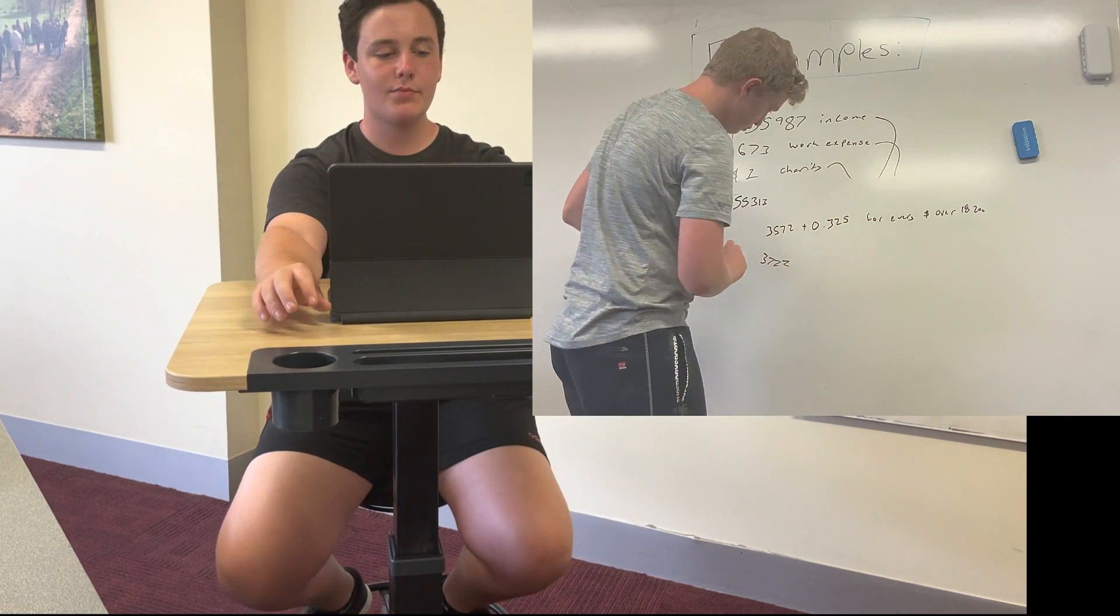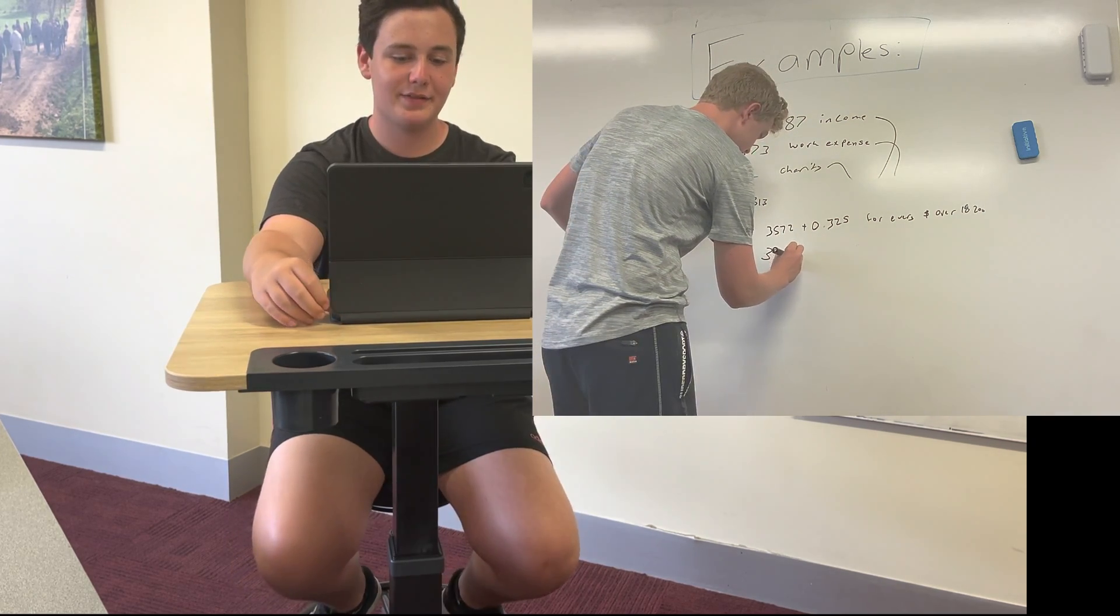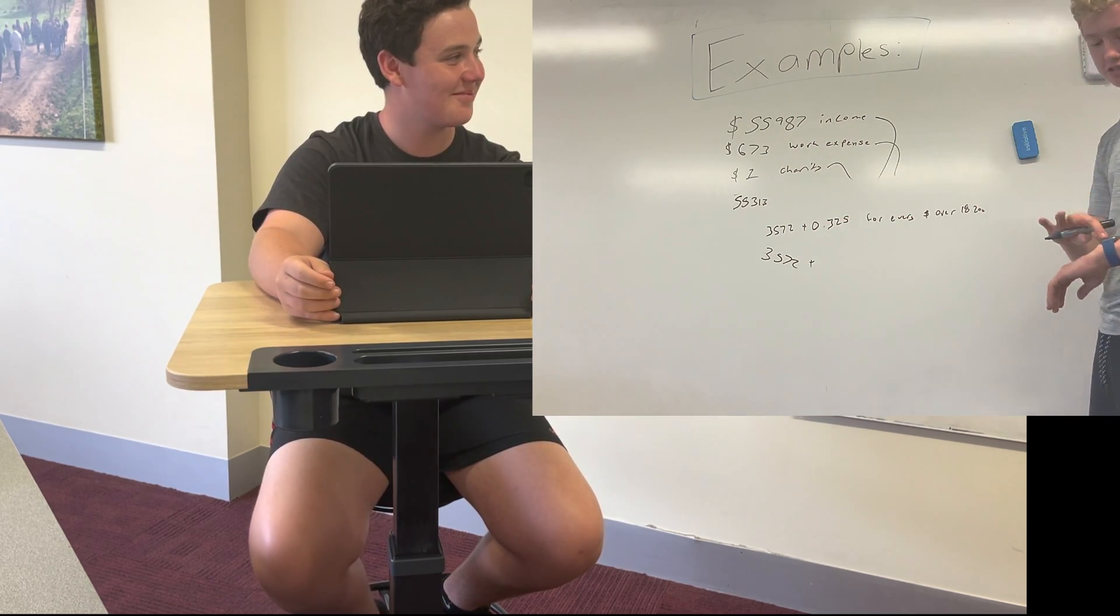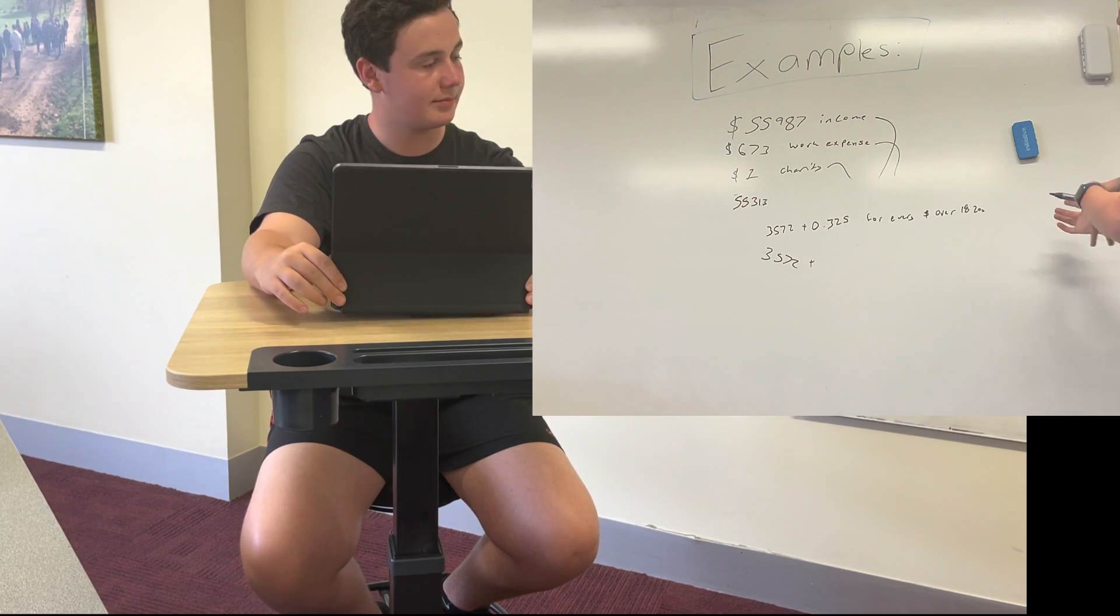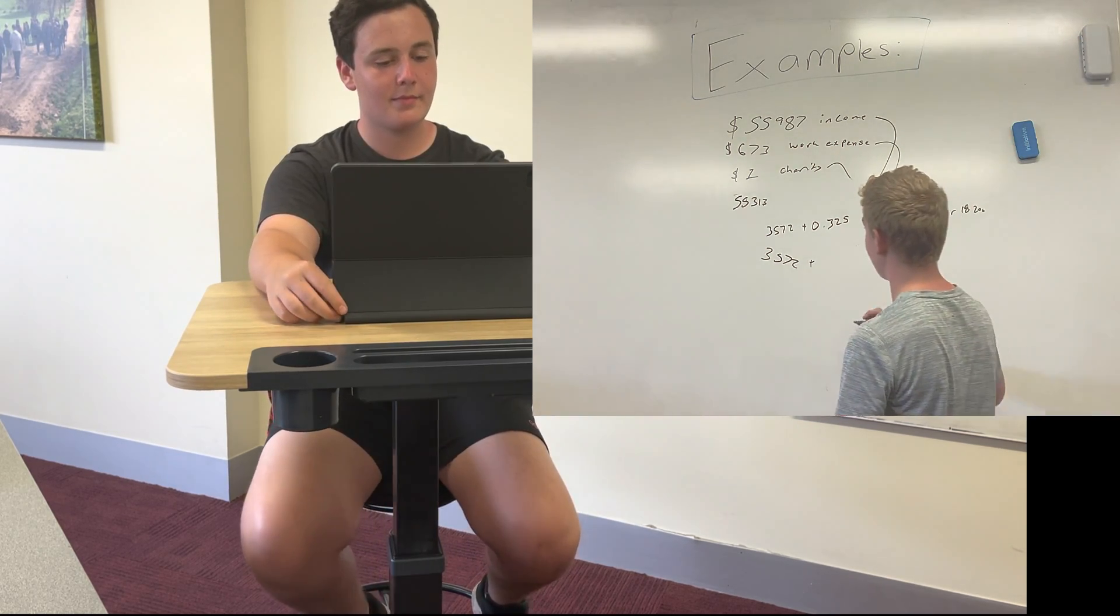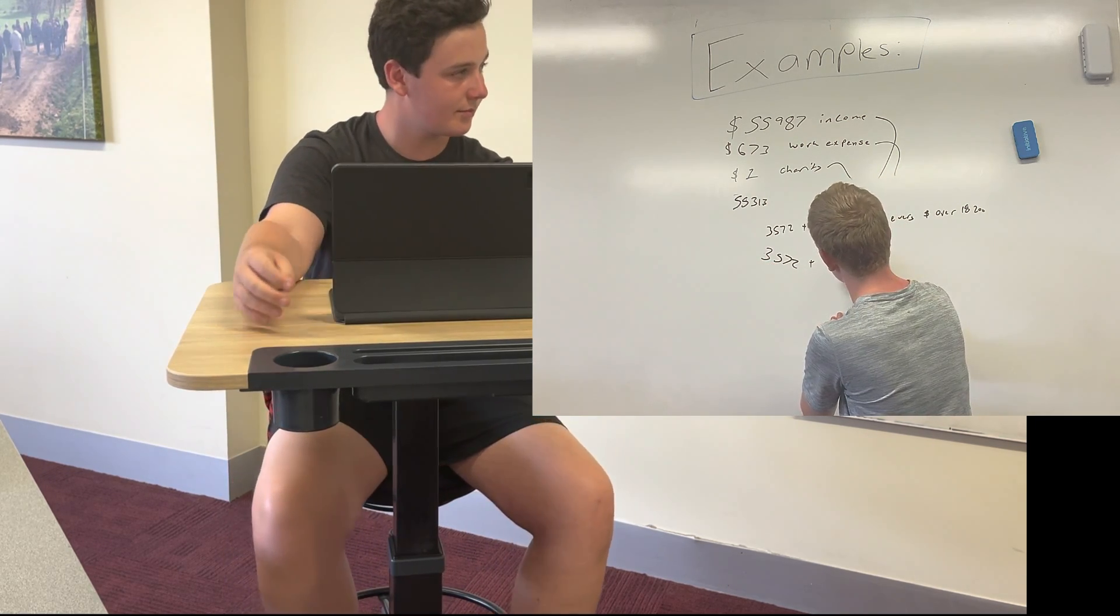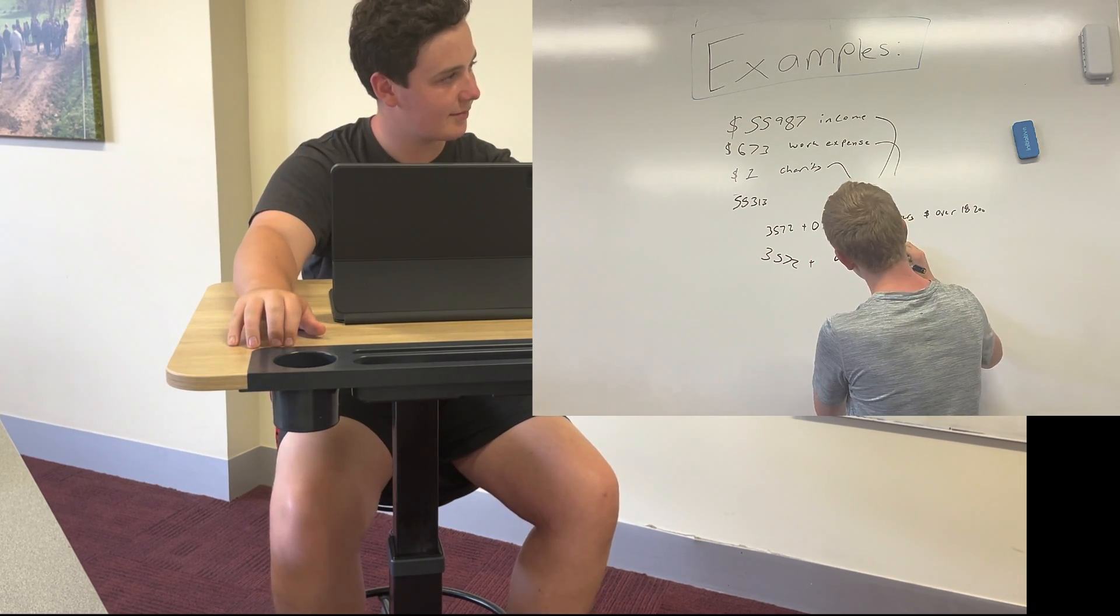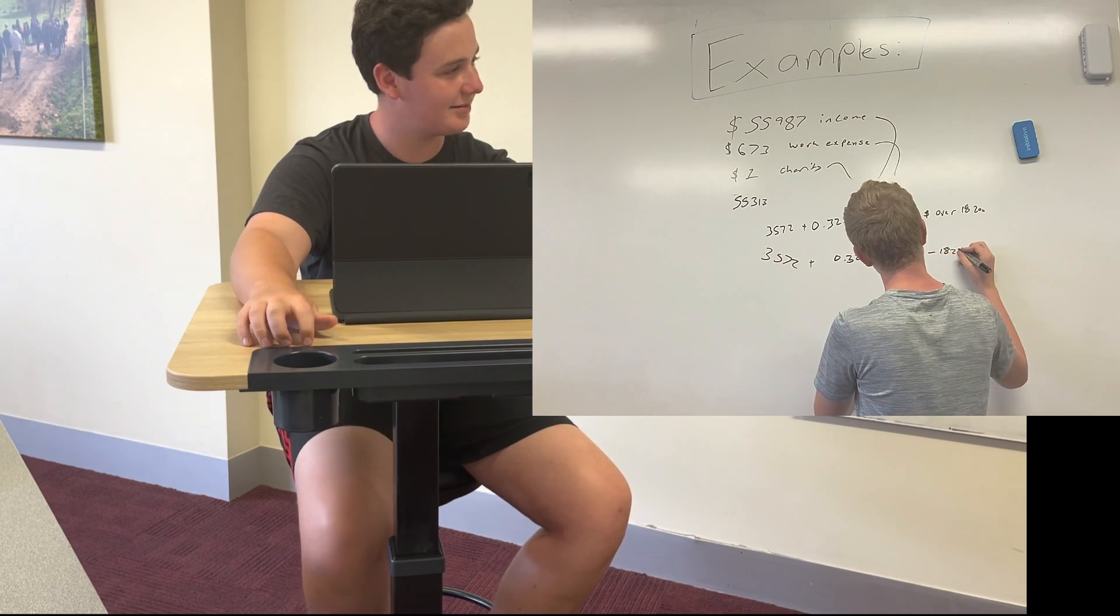So what we do there is we go $3,572, that's our initial amount. So this plus $0.325 for every dollar over $18,200. Basically what that is, that is cents per dollar, so that's how many cents you need to pay per dollar over that $18,200. So how we plug that into a calculator is you can go $3,572 plus $0.325 bracket $55,313 minus $18,200.